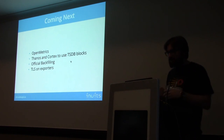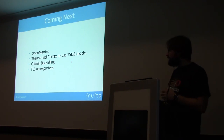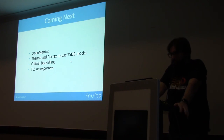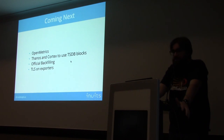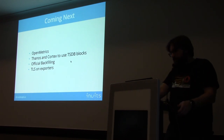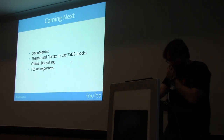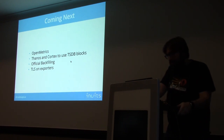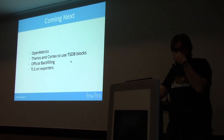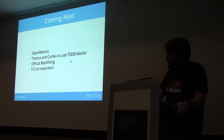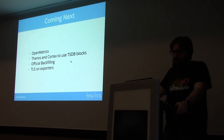Looking at what's coming next: the Prometheus community bootstrapped a standard called OpenMetrics two or three years ago with a bunch of companies and monitoring vendors. It started out of the Prometheus format but removes a lot of imprecision and makes it a real standard that can be adopted by the complete industry. The goal now is to release the official OpenMetrics specification before the next KubeCon in April. Prometheus already supports it, and there is already a reference implementation in Python. Once the spec is released, more and more libraries will be able to expose OpenMetrics out of the box.